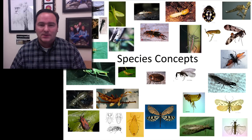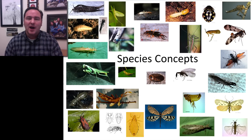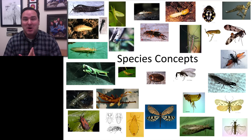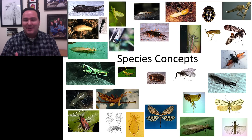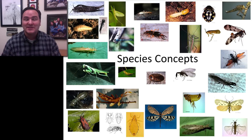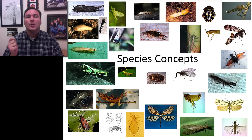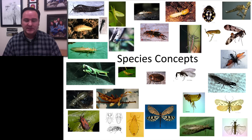Hello students, welcome to this lecture on species concepts. This is a really interesting topic — how do we discriminate one species from another? As an entomologist, there are so many species. There are more described species of insects than any other animal on the planet, and it's such an interesting topic to figure out what is one species and what is another.